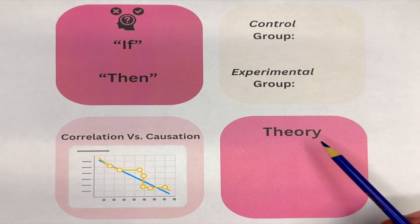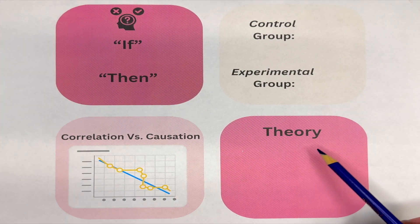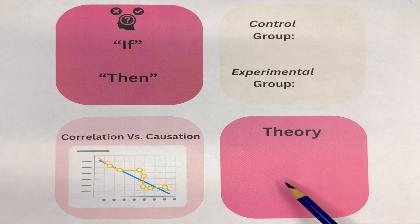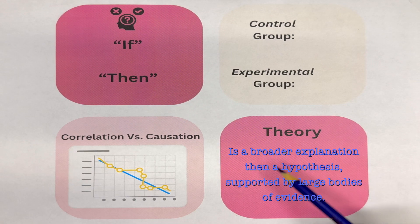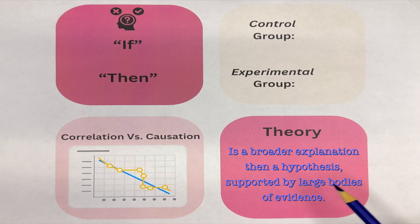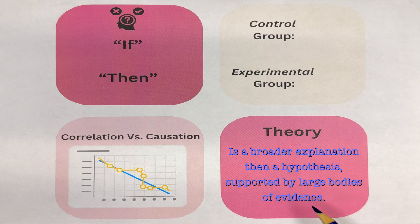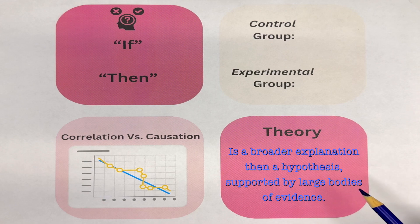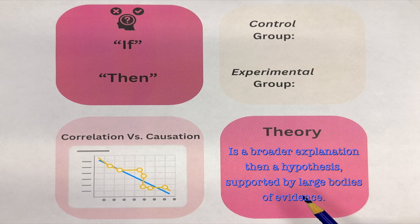The last term we'll talk about today is theory. A theory is a broader explanation than just a hypothesis — it is supported by many different hypotheses or large bodies of evidence. A good example we all know is the Big Bang Theory, which is supported by many different hypotheses.